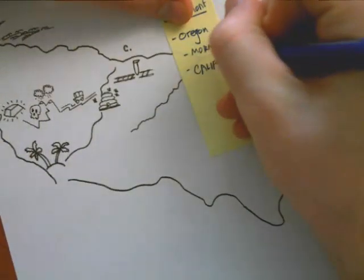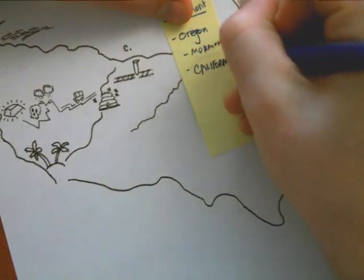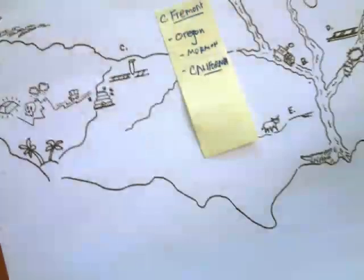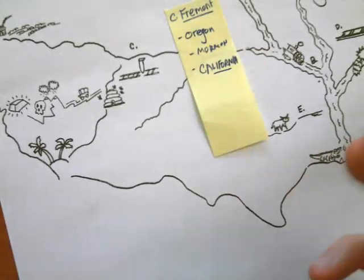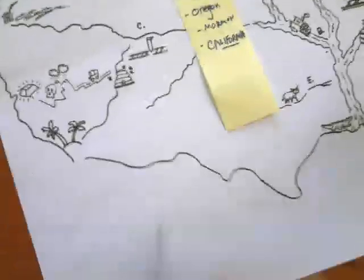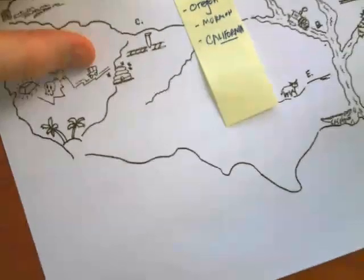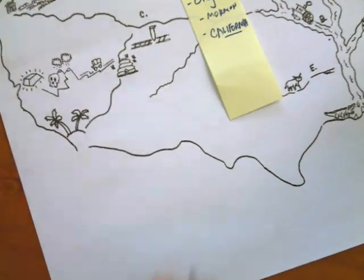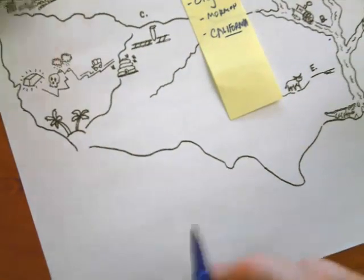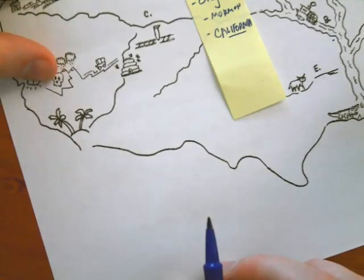To get there to the valleys of California would have been a difficult journey, to say the least, and some of them ended up trying to cross the Great Salt Lake Desert and the Great Basin region, a region that doesn't have any water. They had to cross the Sierra Nevada mountains.